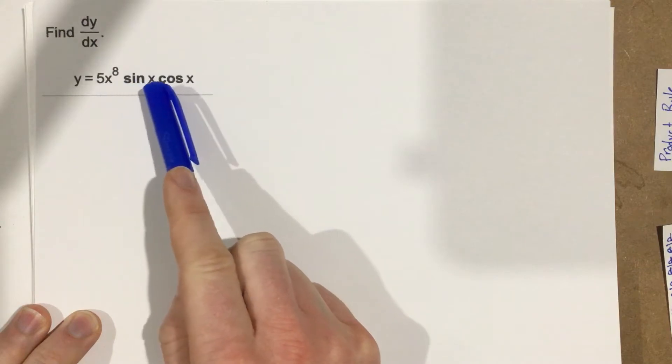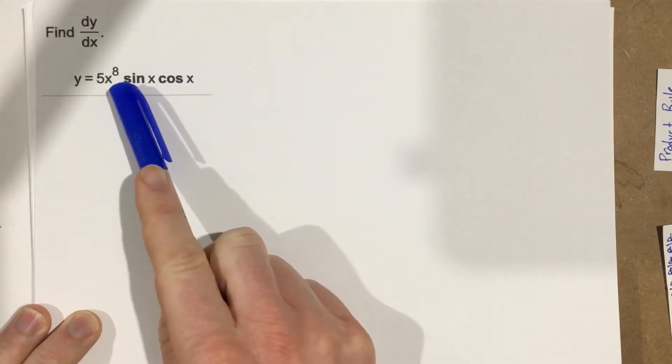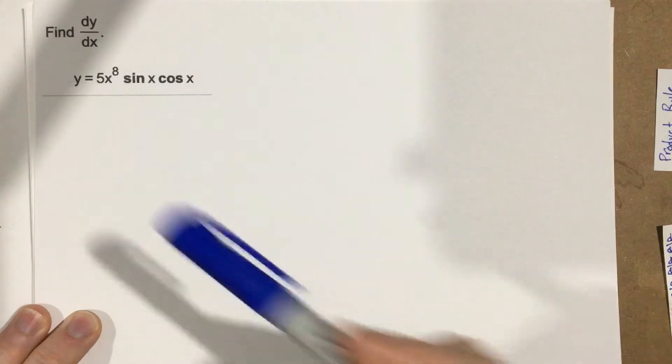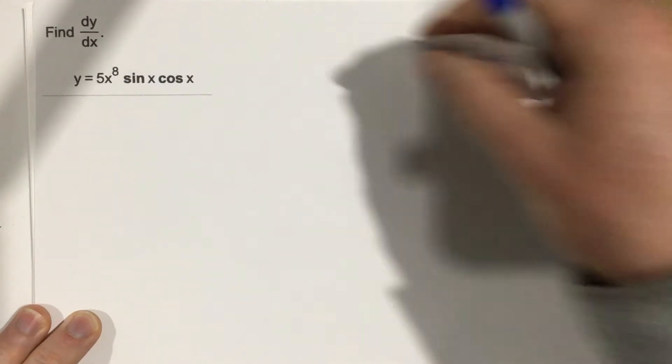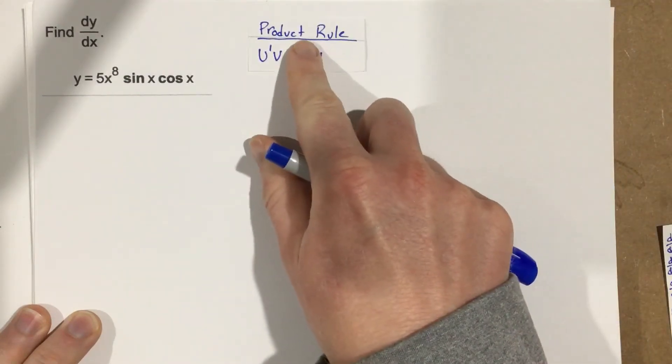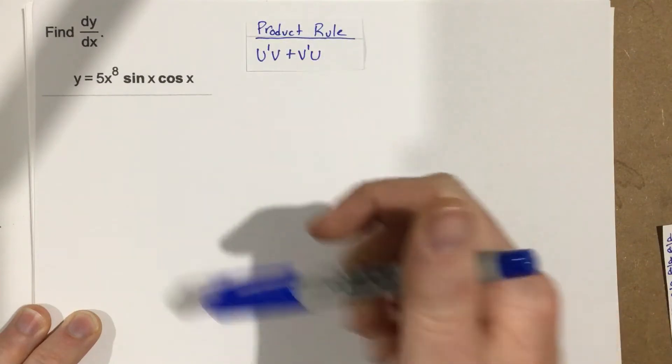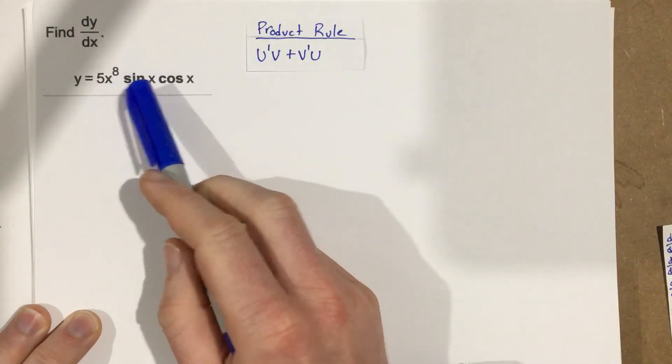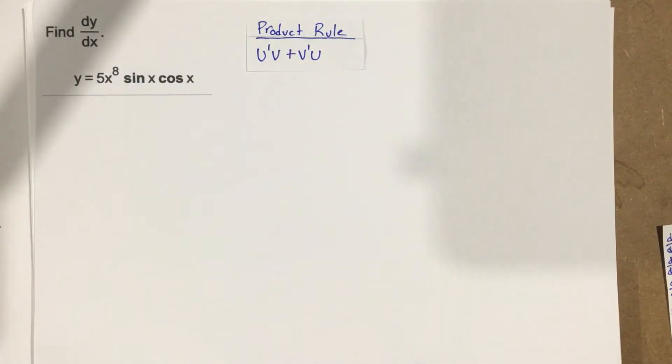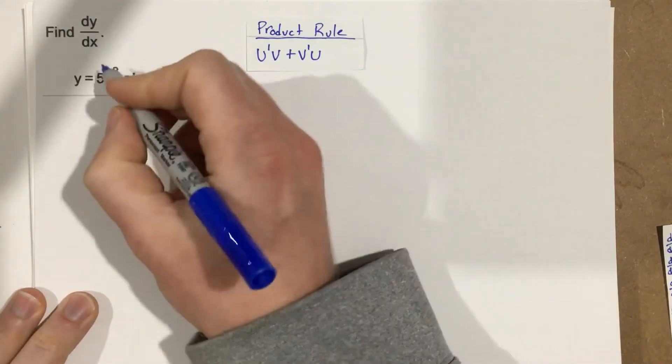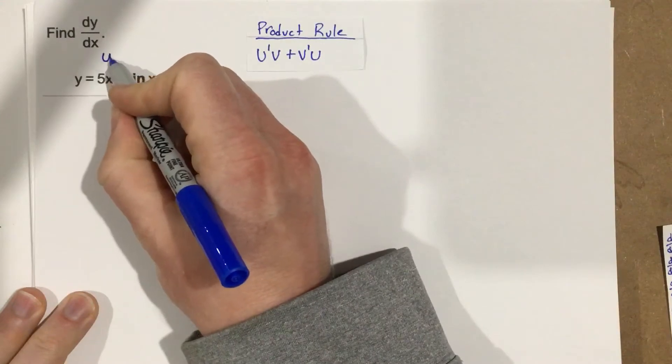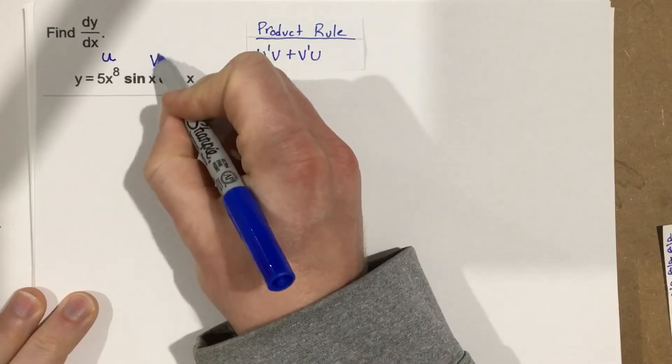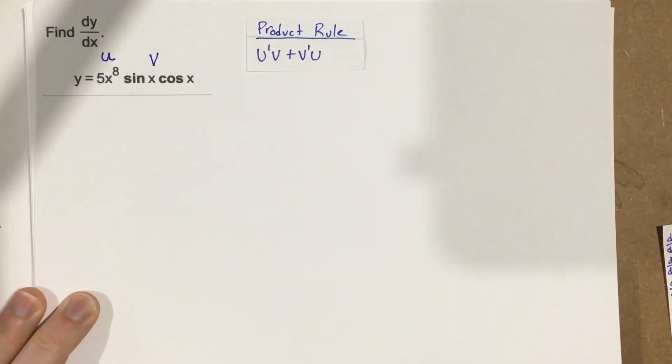So this is a multiplication, and this is a multiplication. You'll notice that because we have the two multiplications, we're going to end up using this product rule, and you might be tempted to use the product rule twice here. Really what we need to do is just define our two functions, and then we use the product rule twice, but we'll do it within the confines of the initial product rule.